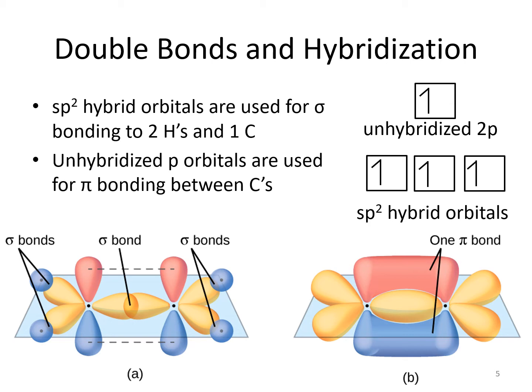The unhybridized p orbital on each carbon has one electron. The p orbitals can overlap above and below the internuclear axis to make a pi bond. In that whole red and blue space above and below the internuclear axis, there are two electrons, one contributed from each carbon atom. That's what makes it a double bond — there is the sigma from the sp2 hybrid orbitals and the pi from the unhybridized p orbitals.